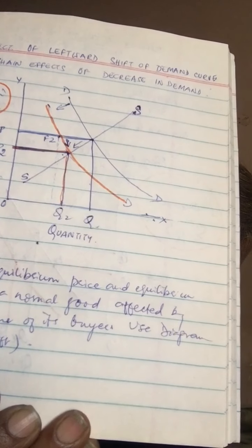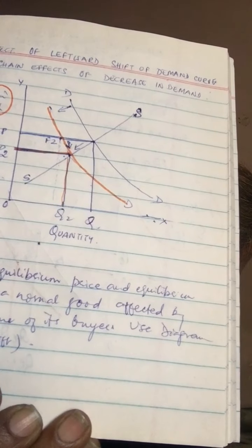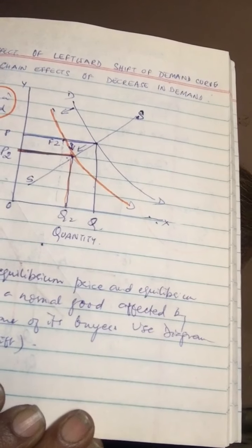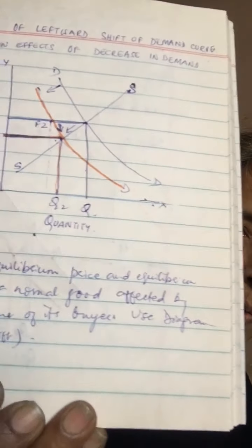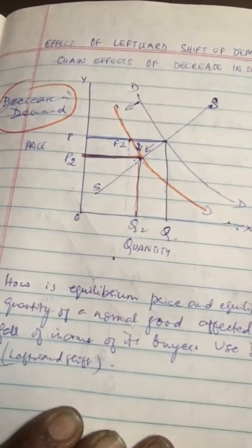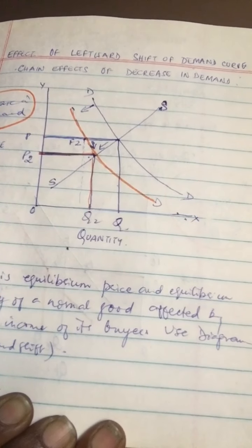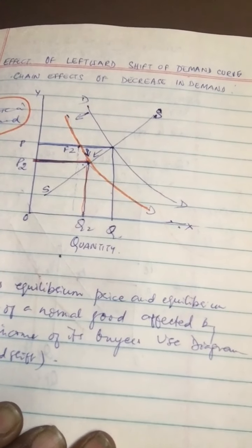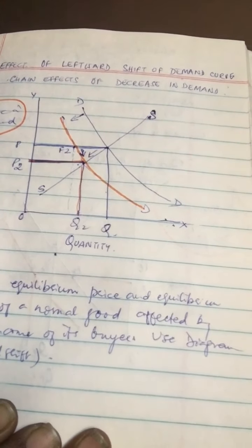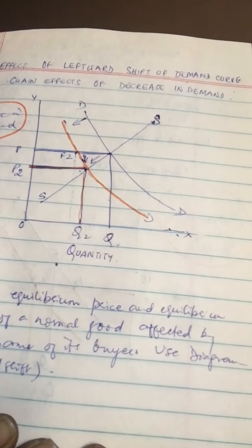When demand decreases, equilibrium price as well as quantity sold also fall. Let's explain the chain effects of decrease in demand. Decrease in demand shifts the demand curve from DD to D2D2, leading to a shortage of demand — that is, EF2 — at the given price OP. There is a decrease in demand which we can see from E to F2.